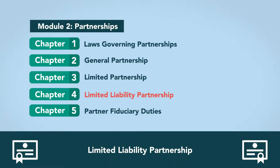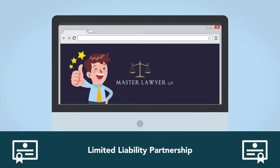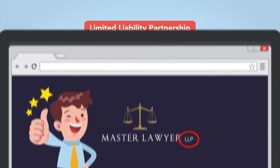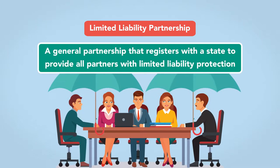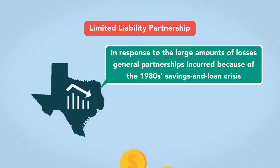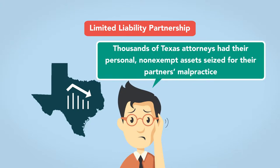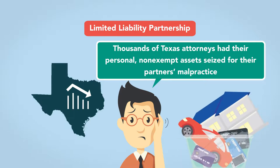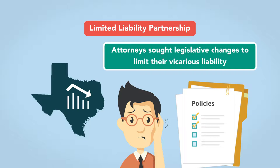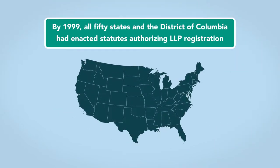Limited Liability Partnership. Browsing through websites for law firms and accounting firms, one will notice that the name of nearly every single one ends with the suffix LLP, which stands for Limited Liability Partnership. The LLP is a general partnership that registers with the state to provide all partners with limited liability protection. LLPs first appeared in Texas in response to the large amounts of losses general partnerships incurred because of the 1980s savings and loan crisis. In the crisis's aftermath, thousands of Texas attorneys had their personal, non-exempt assets seized for their partners' malpractice. To prevent this from occurring again, attorneys sought legislative changes to limit their vicarious liability. By 1999, all 50 states and the District of Columbia had enacted statutes authorizing LLP registration.